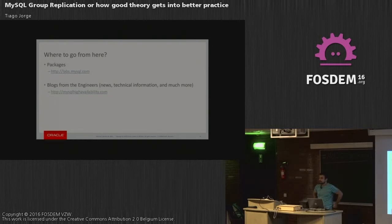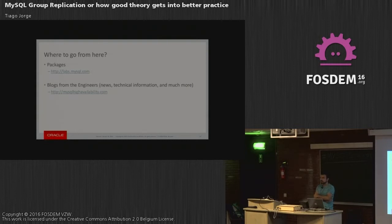Question: When a node leaves the group, will it reject any attempts for inserts, updates, etc.? What's my indication as a user for redistributing queries to other servers? Answer: There's a difference between crashing and leaving voluntarily. If you leave voluntarily, you'll be able to use that node as any other MySQL node. If you leave involuntarily — say the server has a problem communicating with the rest of the group — it will stop accepting queries. You can check its status with PS tables, and it will report itself as offline. Writes will fail.